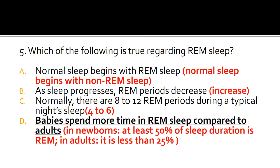A is false because normal sleep begins with non-REM sleep. B is false because as sleep progresses, REM periods increase both in frequency and in duration. C is false because normally there are between 4 and 6 REM periods during a typical night's sleep. D is true: in newborns, at least 50% of sleep duration is REM sleep, while in adults it is less than 25%.